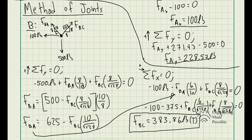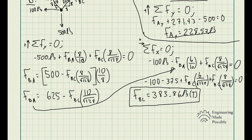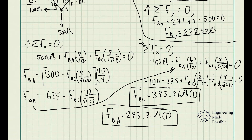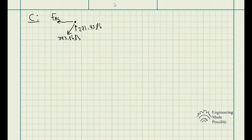Since we have FBC and the equation for FBA, we substitute FBC = 383.86 lb back in to get FBA = 285.71 lb. To find the remaining member force FAC, we repeat the method of joints at either joint A or joint C. Looking at joint C, FBC = 383.86 lb pulling away from the joint (tension), and we assume FAC is also in tension.